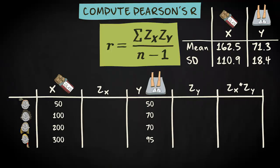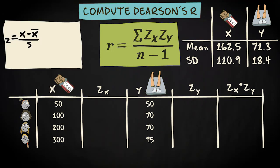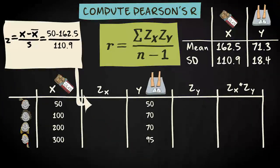We get the z-scores by applying this formula to every case. We subtract the mean from every value and then divide it by the standard deviation. So, 50 minus 162.5 divided by 110.9 equals minus 1.01.